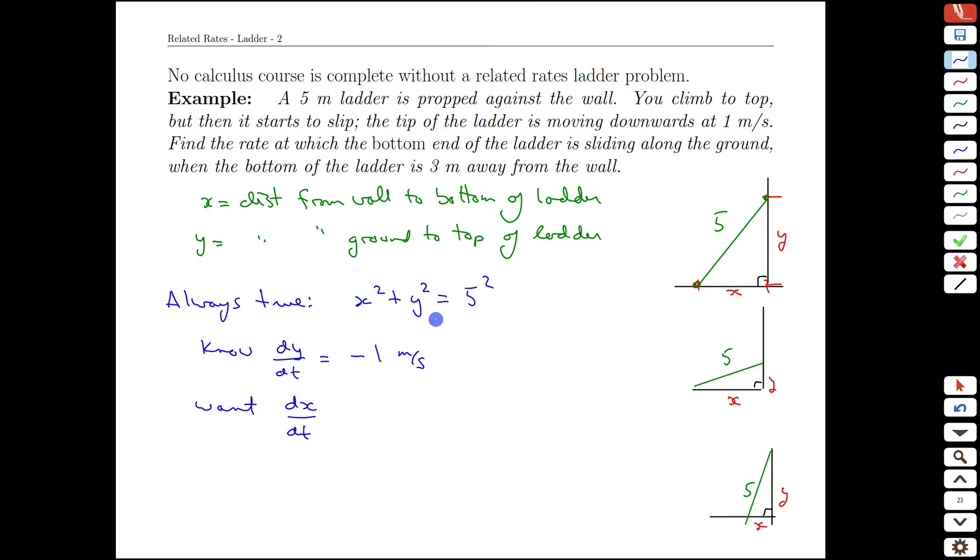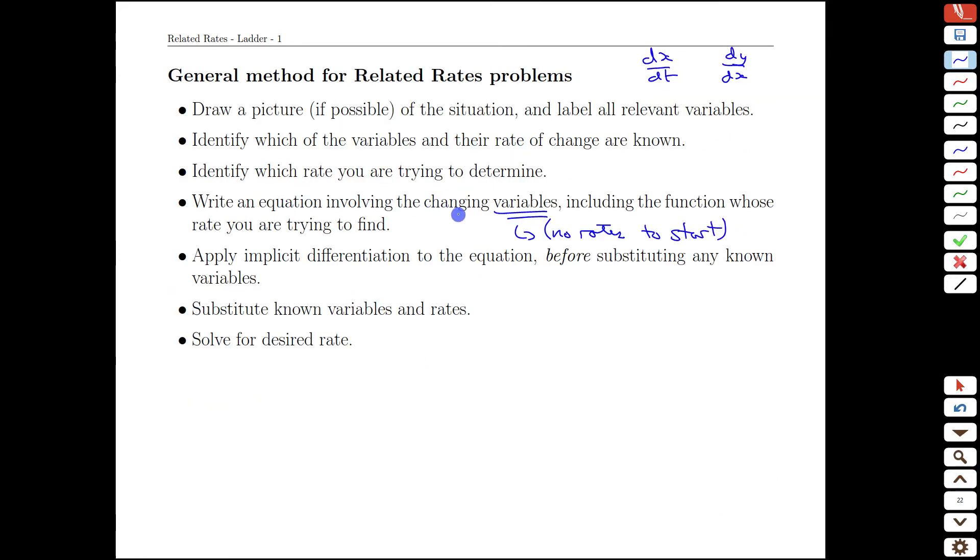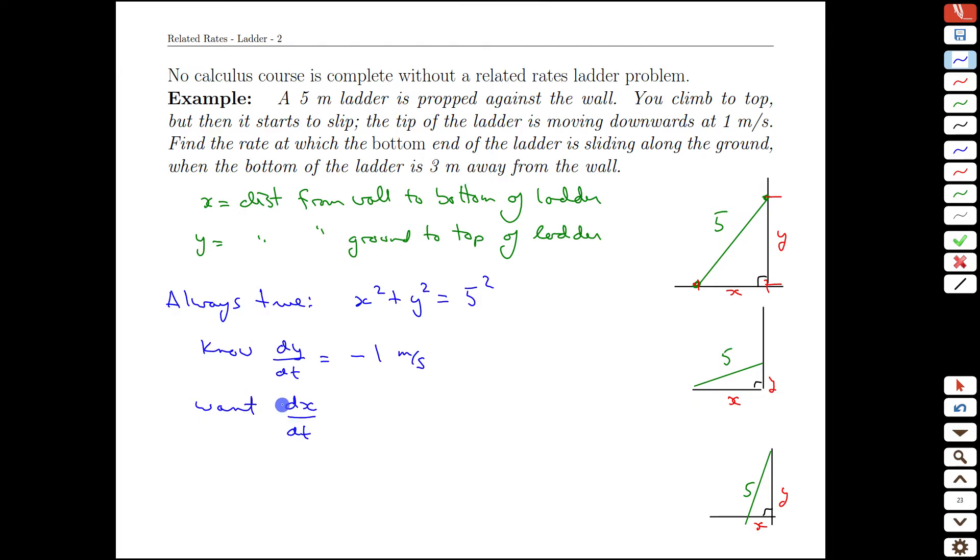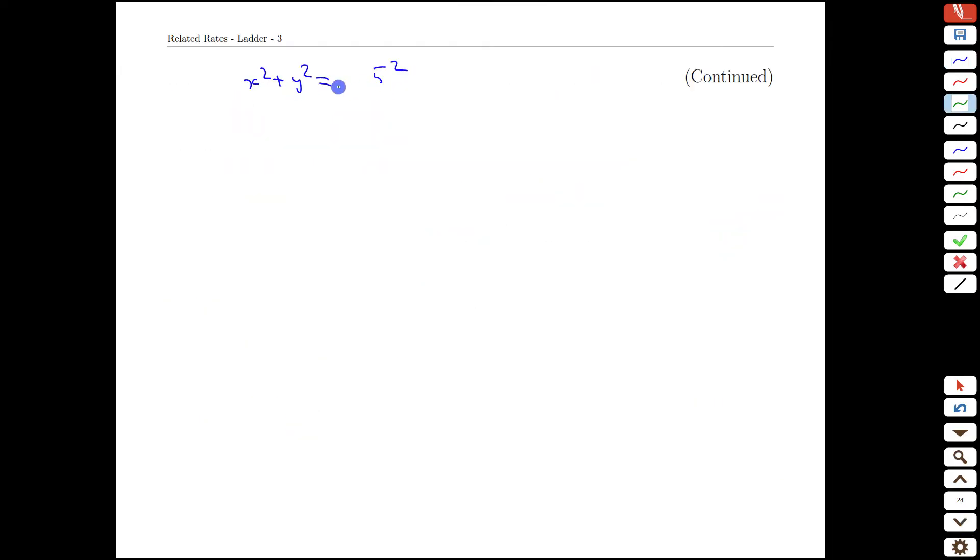We're going to take that relationship with no rates and then apply implicit differentiation to get the rates that we know and the ones that we want in an equation together. This relationship ties x and y, which are both changing with time, with this constant five squared. We can take the time derivative of both sides. One side is super easy, it's simply zero. The other side, we're taking the time derivative of x squared. The derivative of anything squared is two times the same thing, and then the derivative of the inside. What do we want here? We want dx/dt.